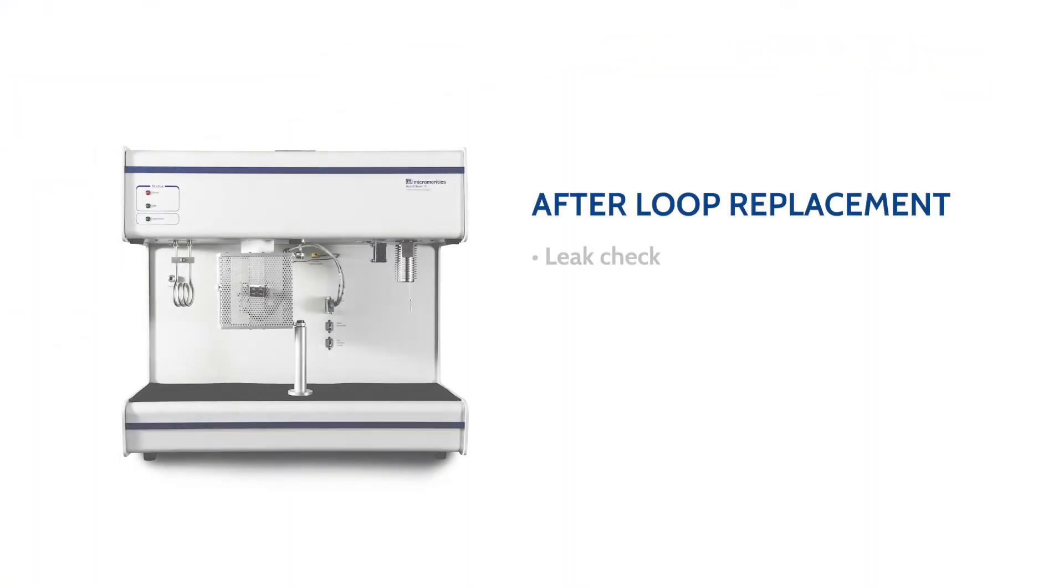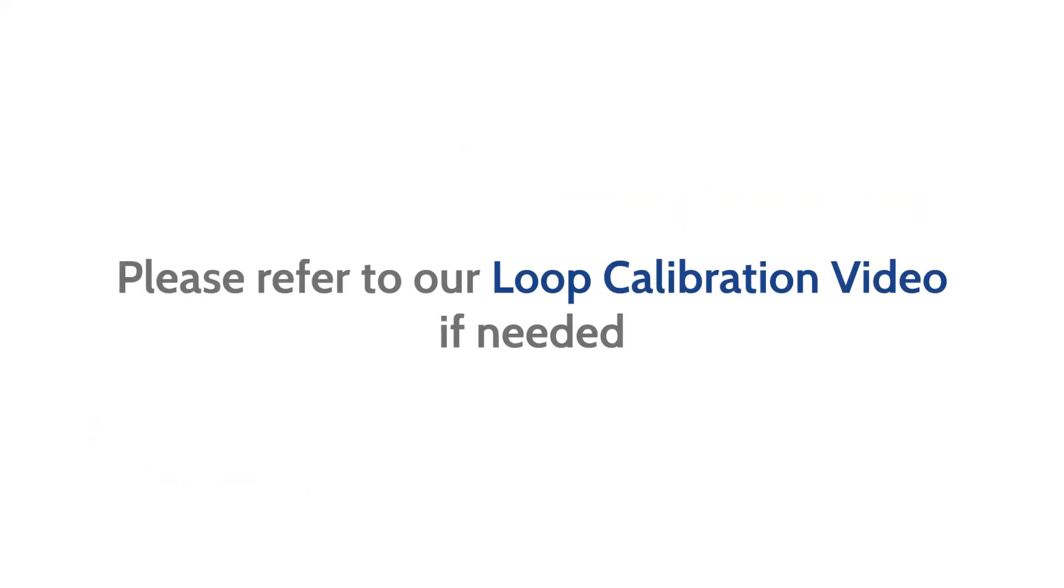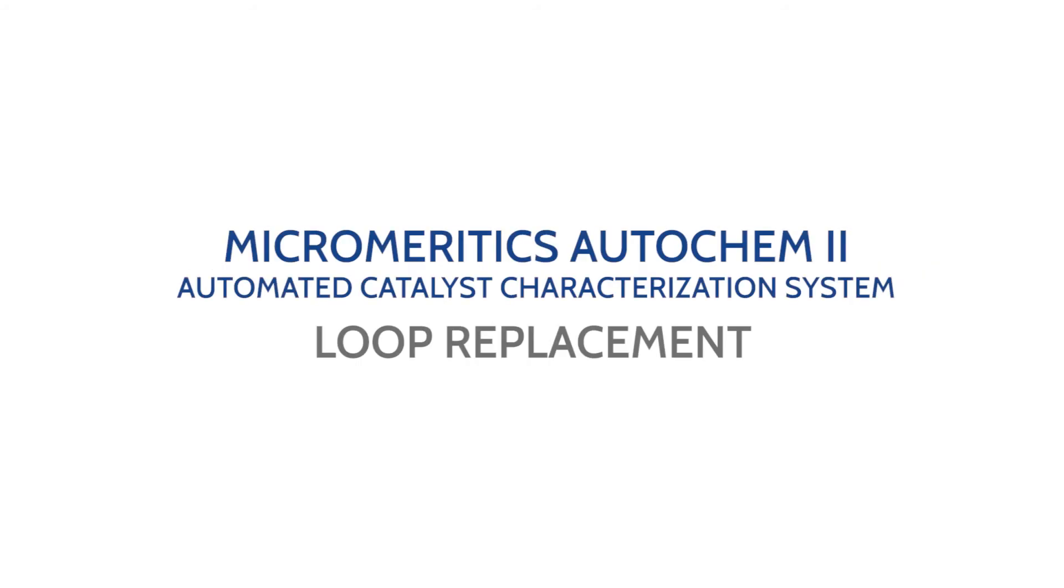A leak check and loop calibration should be performed after the loop is replaced. Please refer to our loop volume calibration video if needed. You have now replaced the injection loop on the Micromeretics AutoChem 2 Automated Catalyst Characterization System.